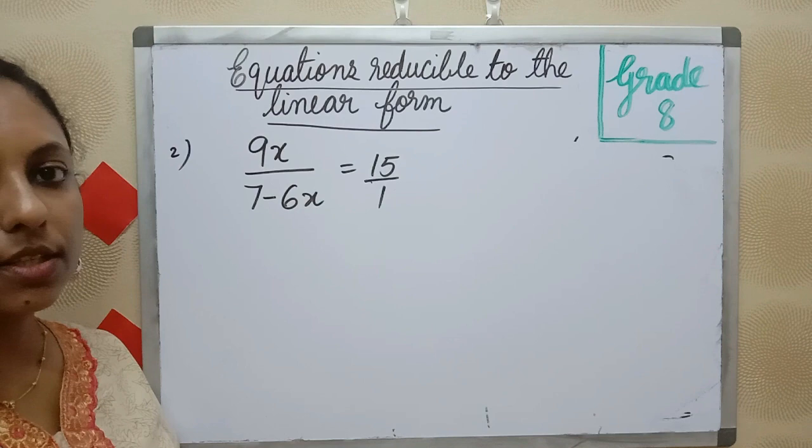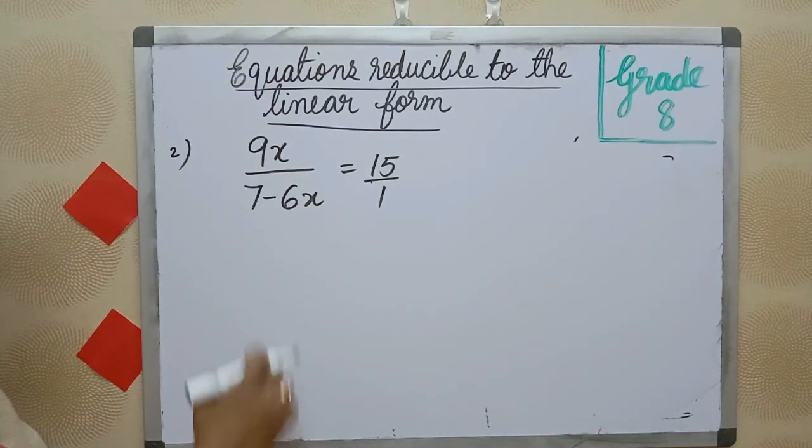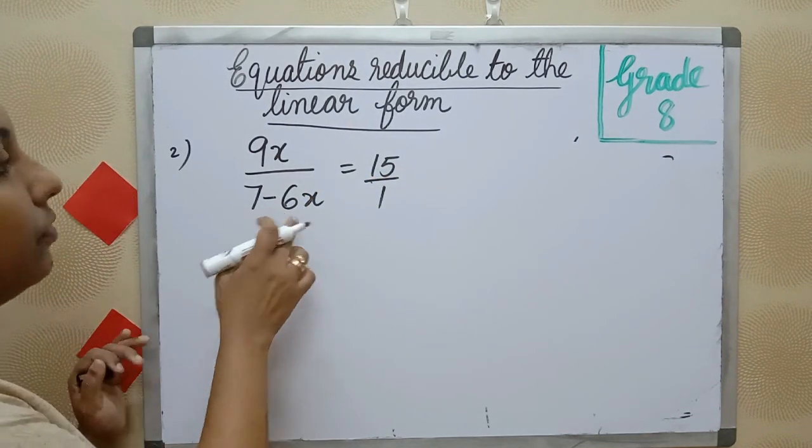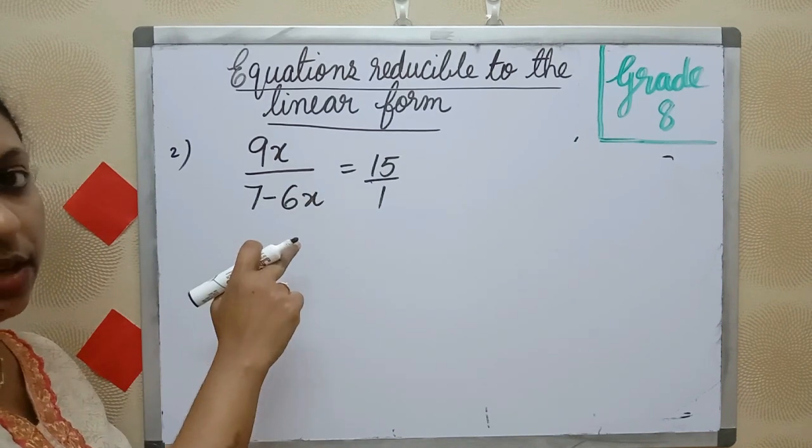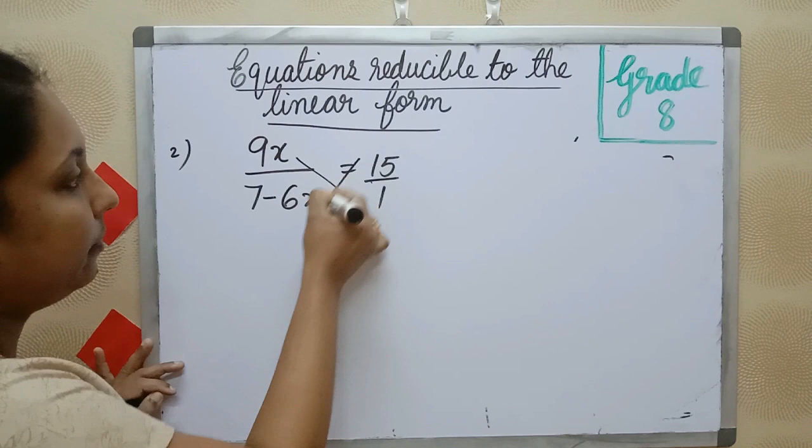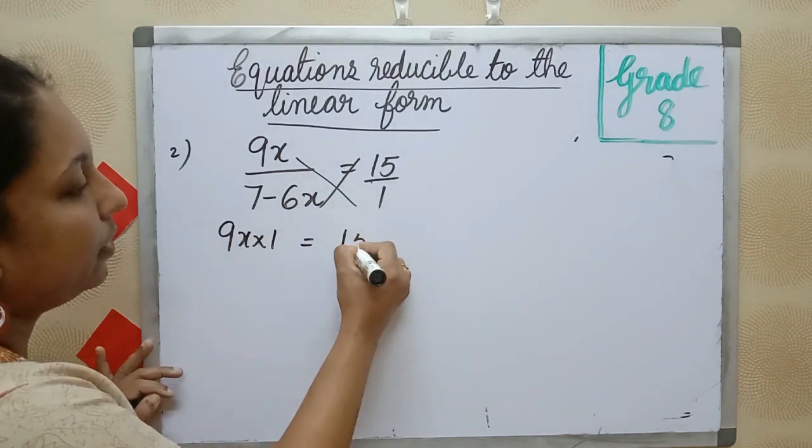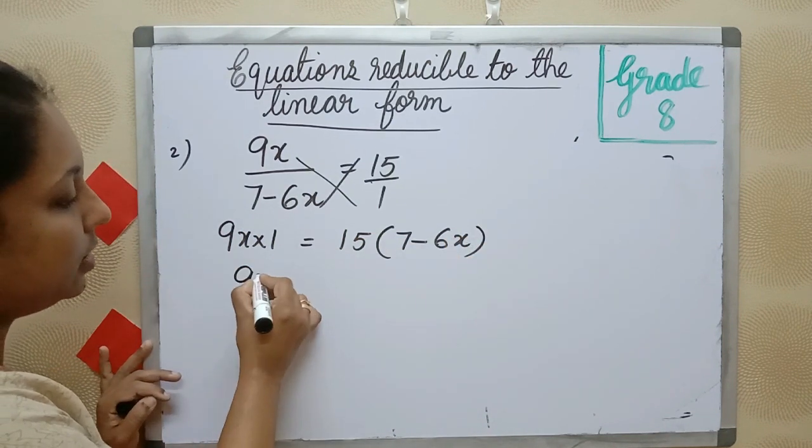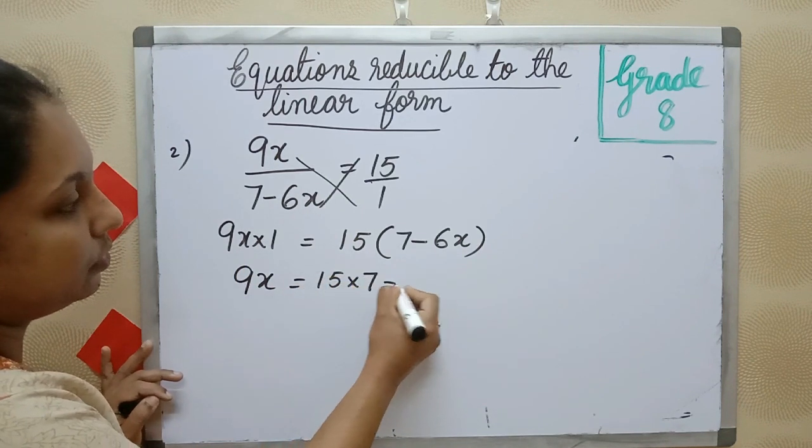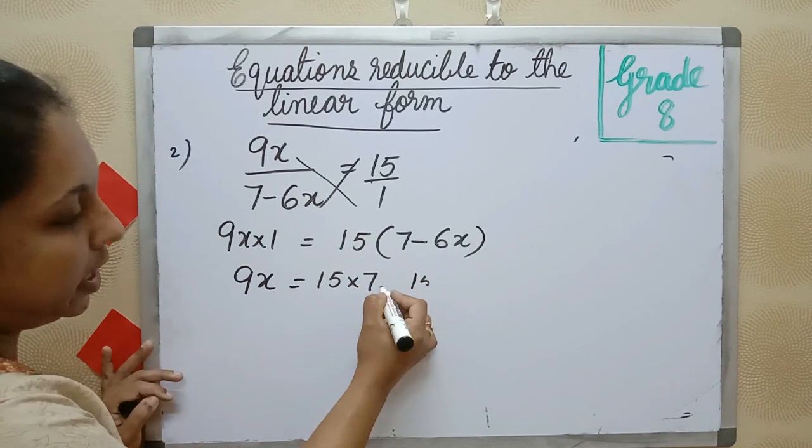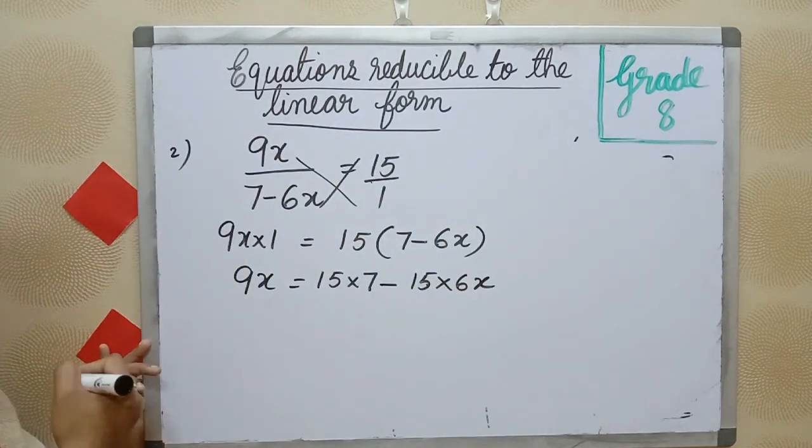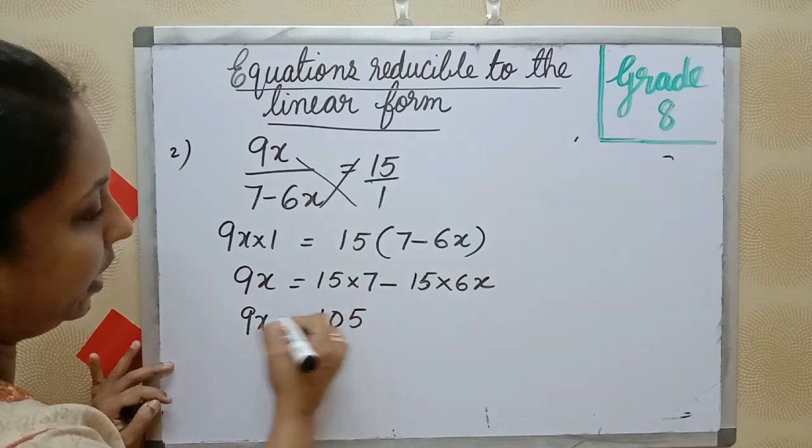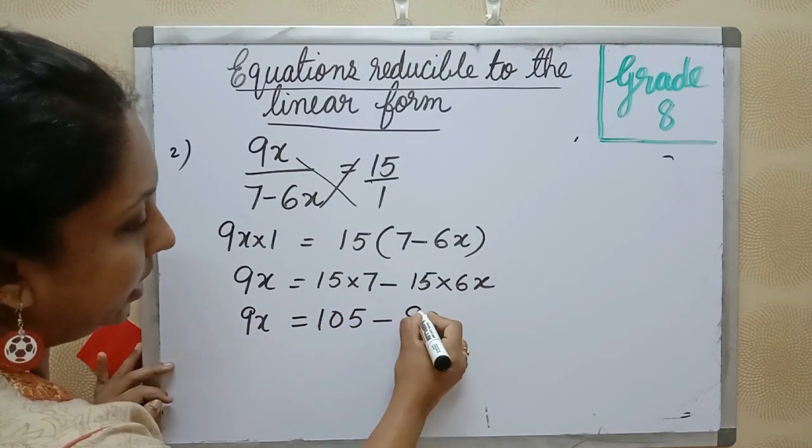We can do few questions from the textbook. Second question: 9x divided by 7 minus 6x is equal to 15. First we can change this into linear form by cross multiply. 9x into 1 is equal to 15 into 7 minus 6x. So 9x is equal to 105 minus 90x.